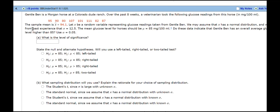We're told what the sample mean is, and we're told that these represent glucose readings, and we are to assume that the distribution is normal, and we know from past experience that the standard deviation for this horse is 12.5, and the mean glucose level for horses should be about 85 milligrams per 100 milliliters. Does the data indicate that Gento Ben has an overall average glucose level higher than 85, and we're supposed to use an alpha of 0.05?